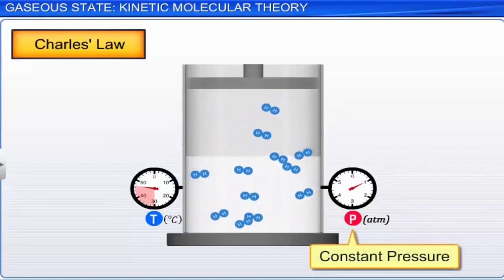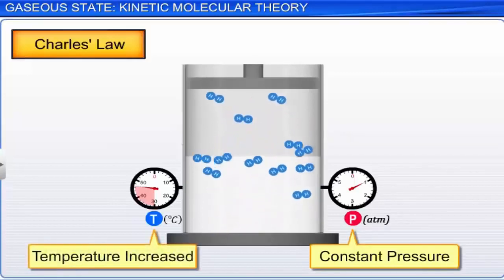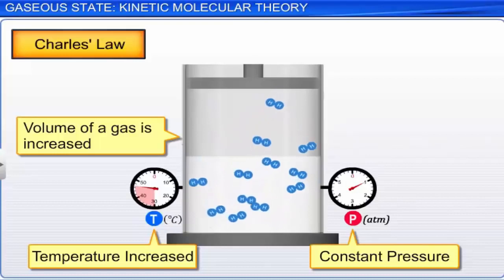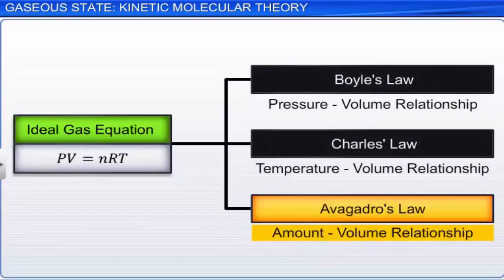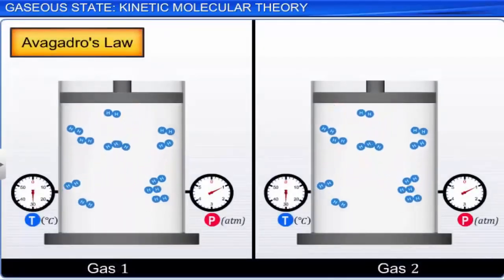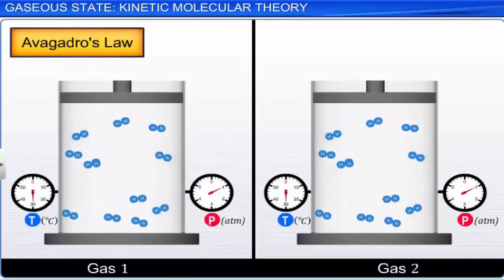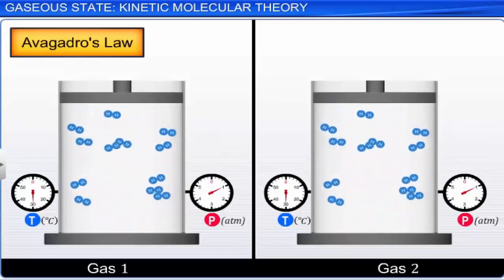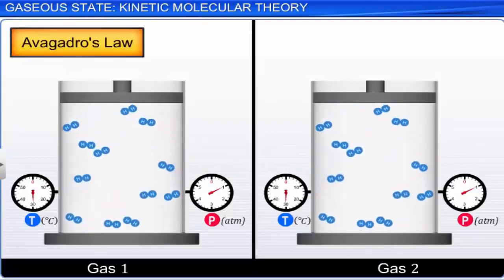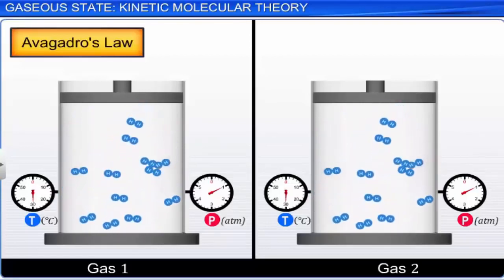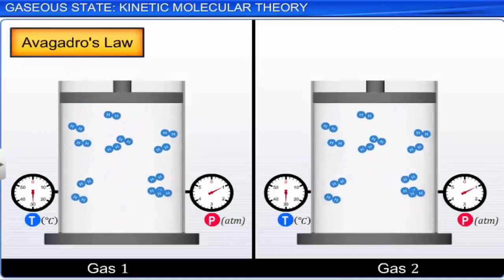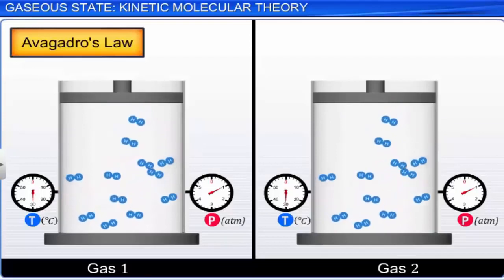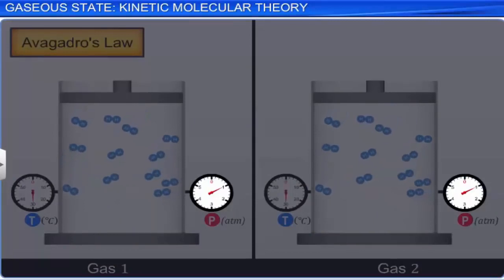Next let's move on to Avogadro's law. Consider equal volumes of two gases under the same conditions of temperature and pressure. Since the temperature of the two gases is the same, according to kinetic molecular theory, the average kinetic energy of the gas molecules should also be the same. Since the pressure of a gas depends on the number of molecules per unit volume as well as their average kinetic energy, and since the two gases have the same pressure and kinetic energy, they must have an equal number of molecules per unit volume. This means equal volumes of all gases under similar conditions of temperature and pressure contain an equal number of molecules. This is Avogadro's law.